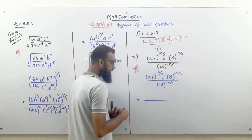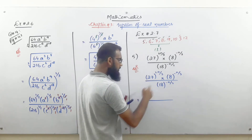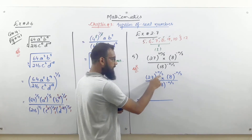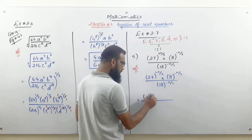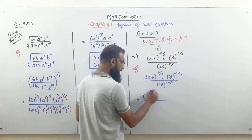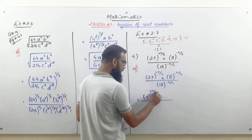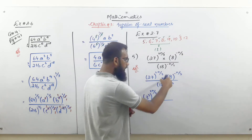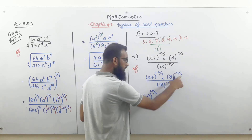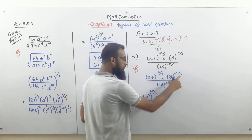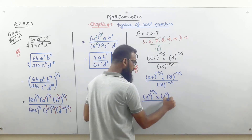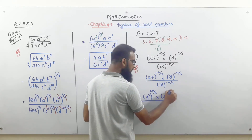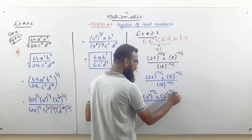First step: 27 — which cube is it? 27 is 3³, so we write (3³) whole power 2n/3. Then 8 — which cube? 8 is 2³, so we write (2³) whole power −n/3.